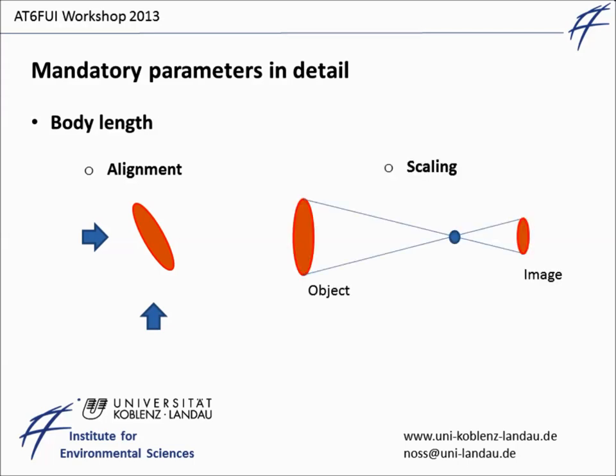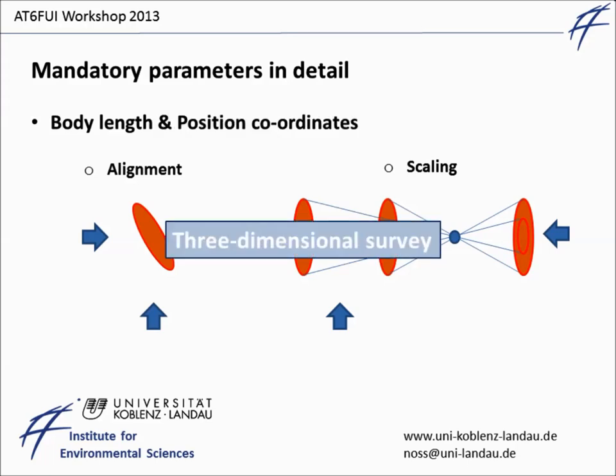The scaling must be taken into account too, because objects far away from the focal point are displayed much smaller on the image in comparison to the same object closer to the focal point. Again, two different perspectives are necessary to estimate the true size unless one uses telecentric lenses. Hence, to estimate the body length but also for the coordinates of the positions, one needs a three-dimensional survey of the control volume.